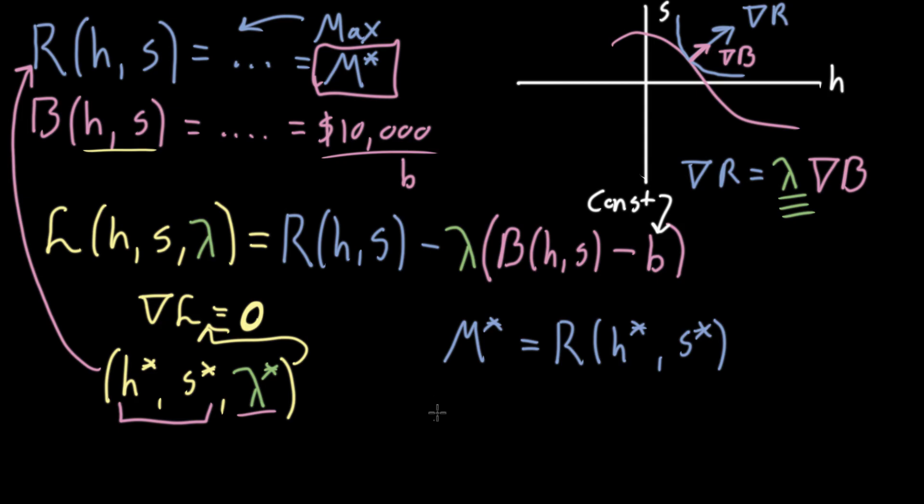But what we could do is consider this as a function of the budget. Now this is the kind of thing that looks a little bit wacky if you're just looking at the formulas. But if you actually think about what it means in this context of a revenue and a budget, I think it's actually pretty sensible. Where really, if we consider this b no longer to be constant, but something that you could change, you're wondering, well, what if I had a $20,000 budget? Or what if I had a $15,000 budget? You want to ask the question, what happens as you change this b?